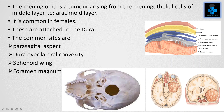It is common in females. These are attached to the dura. The common sites are the parasagittal aspect, dura over the lateral convexity, the sphenoid wing, and also the foramen magnum.